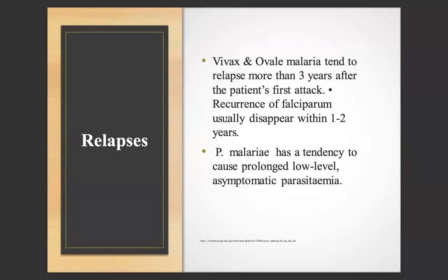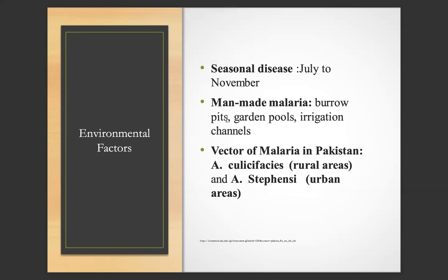Regarding relapses: P. vivax and P. ovale tend to relapse more than three years after the patient's first attack. Recurrence of P. falciparum will disappear within one to two years. P. malariae has a tendency to cause prolonged low-level symptomatic parasitemia. Malaria is a seasonal disease occurring from July to November. Man-made malaria sources include burrow pits, garden pools, and irrigation channels. Vectors of malaria in Pakistan include Anopheles culicifacies in rural areas and Anopheles stephensi in urban areas.